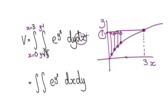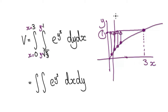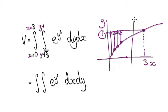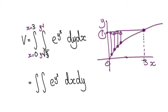Looking at x, we're scanning from zero to three. We're moving along like this, scanning all the way through from zero to three. So this is our region of interest.